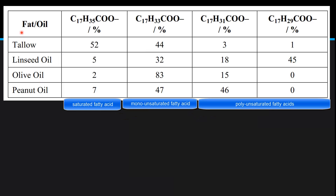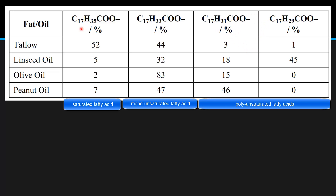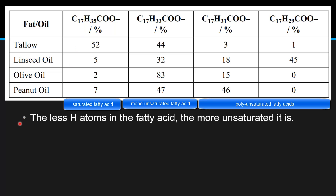Next we look at some examples of fats and oils and determine if they're mostly composed of saturated fatty acids, monounsaturated fatty acids, or polyunsaturated fatty acids. By looking at the chemical formulas for these fatty acids we can determine the degree of unsaturation. The fewer hydrogen atoms in the fatty acid, the more unsaturated it is, meaning it contains more carbon to carbon double bonds.